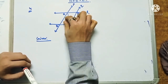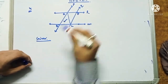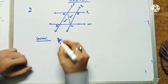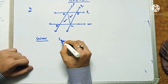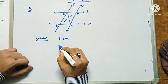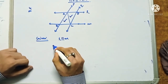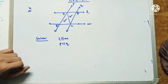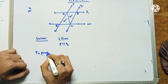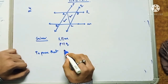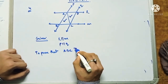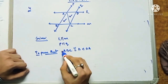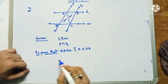Writing the given and the proof setup: L is parallel to M and P is parallel to Q — given. To prove: triangle ABC is congruent to triangle CDA. Taking triangle ABC and triangle CDA for the proof.